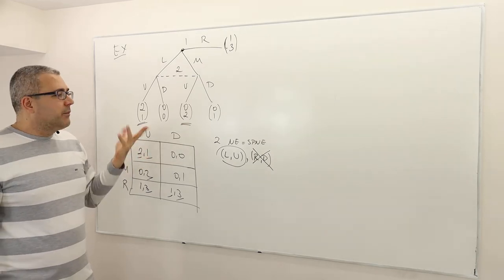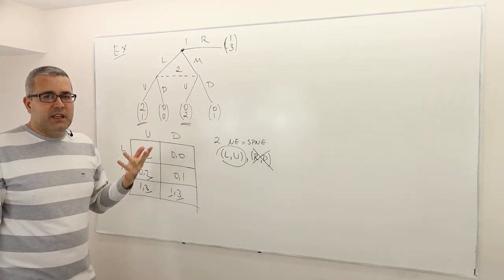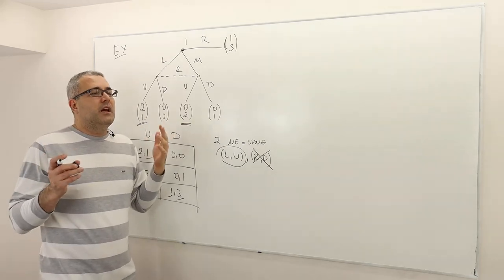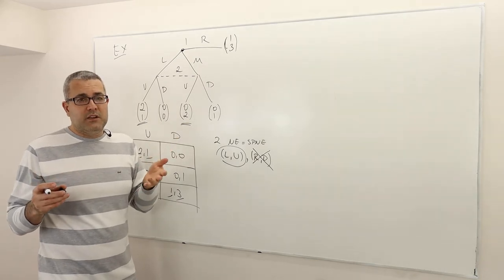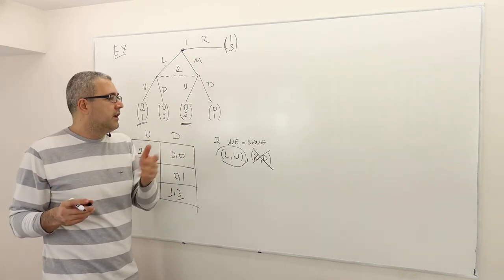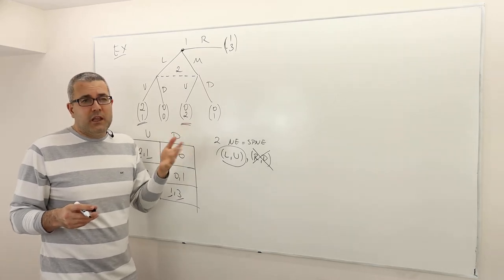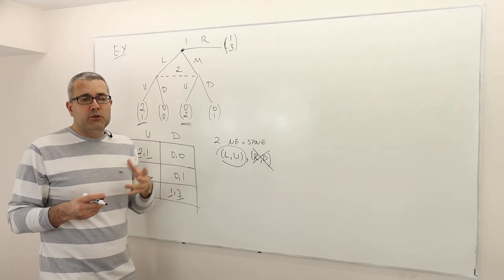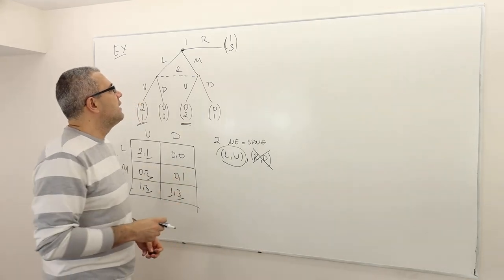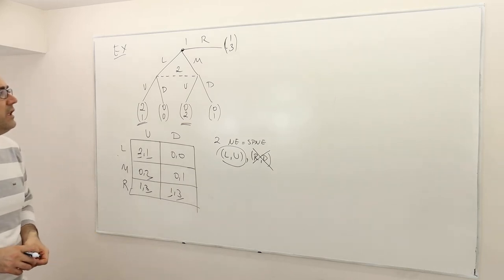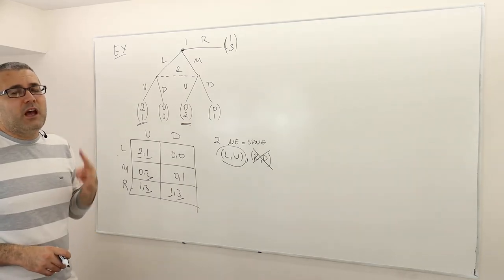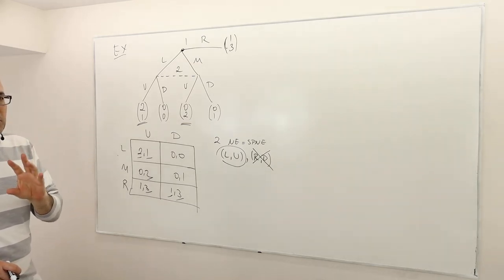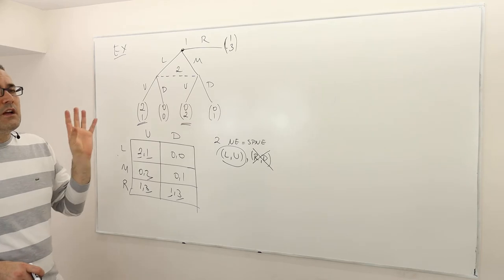But how? Subgame perfection doesn't really do that. Maybe an easy way is to define a Nash equilibrium such that no player plays weakly dominated strategies — that's a perfect remedy and it works in this game, but in other games it doesn't. So for that reason, we developed a stronger, better equilibrium notion, which is perfect Bayesian equilibrium. So how do we find that? Remember, we have to satisfy four requirements. A strategy profile is a perfect Bayesian equilibrium if it satisfies four requirements.